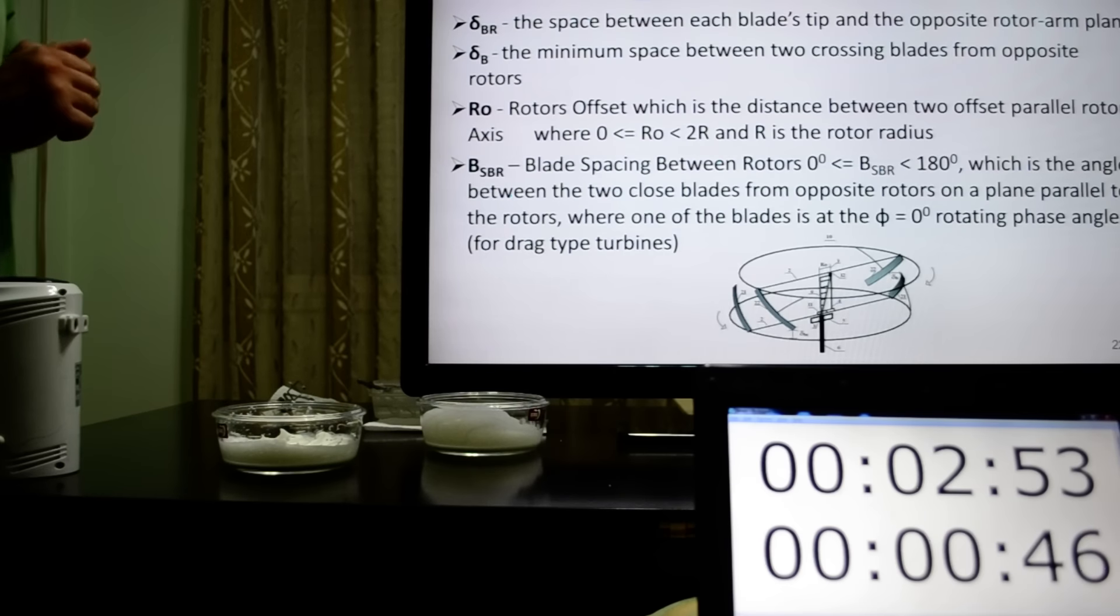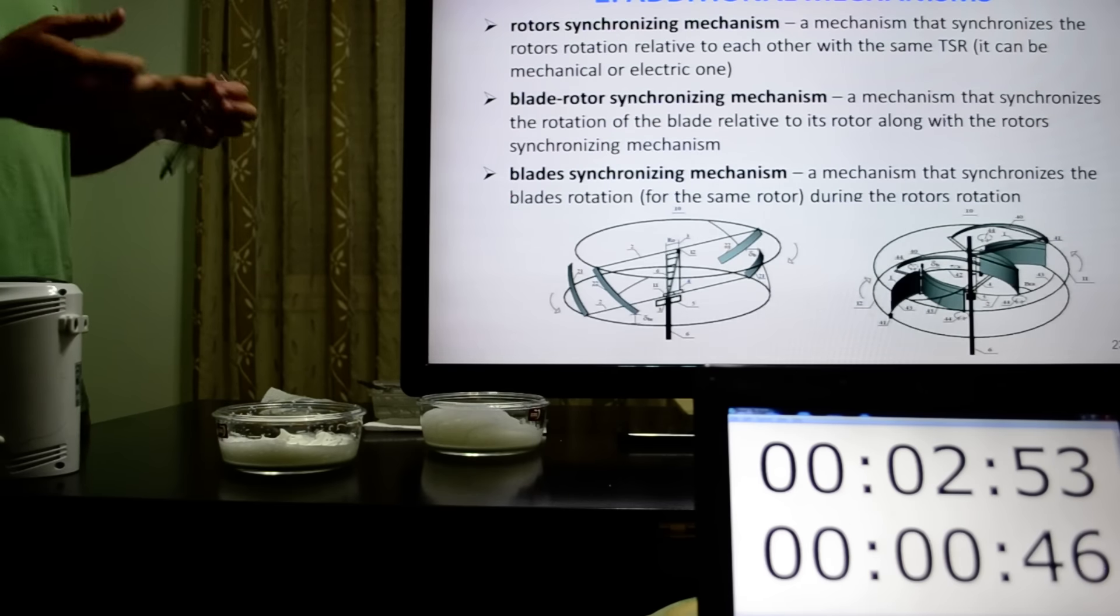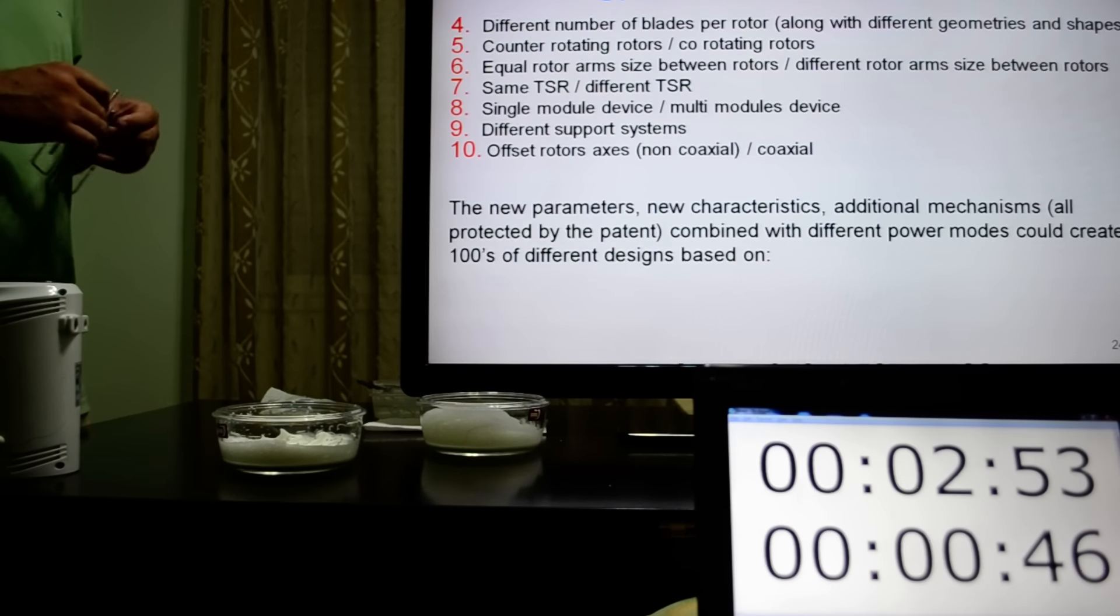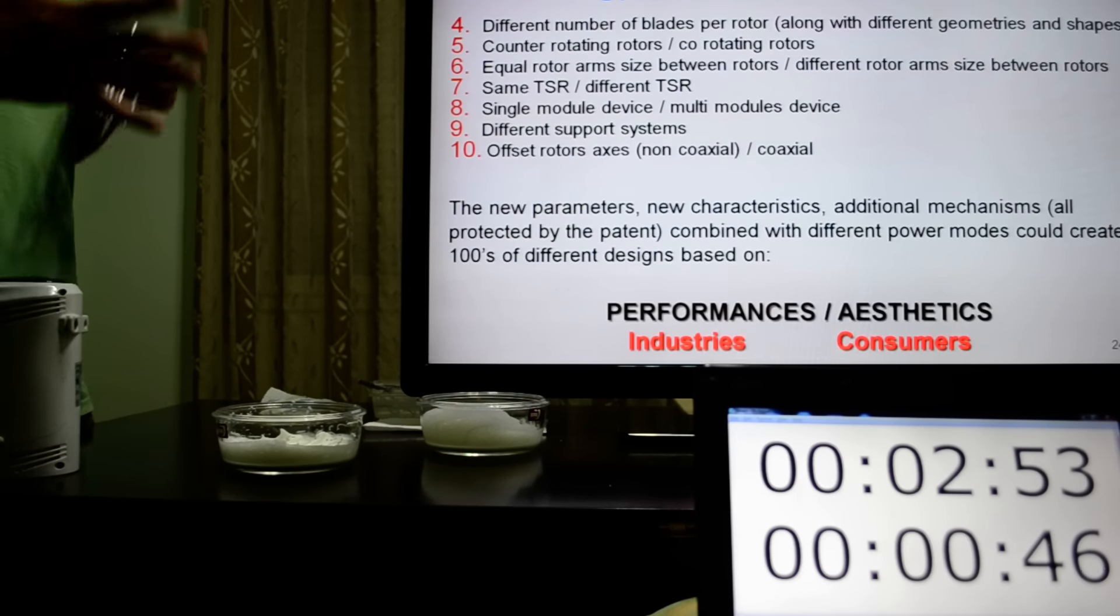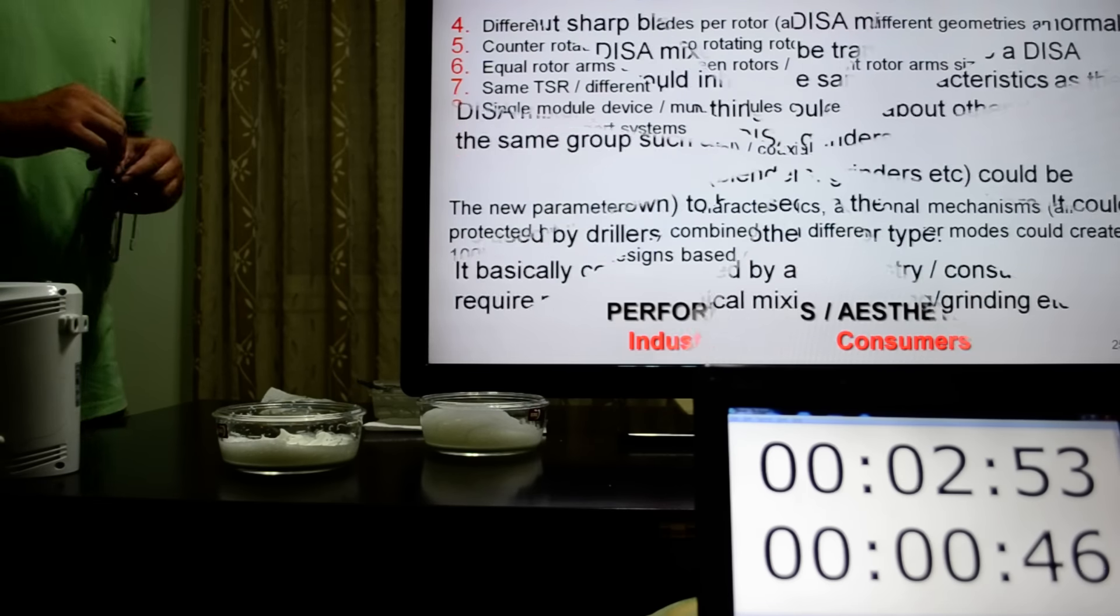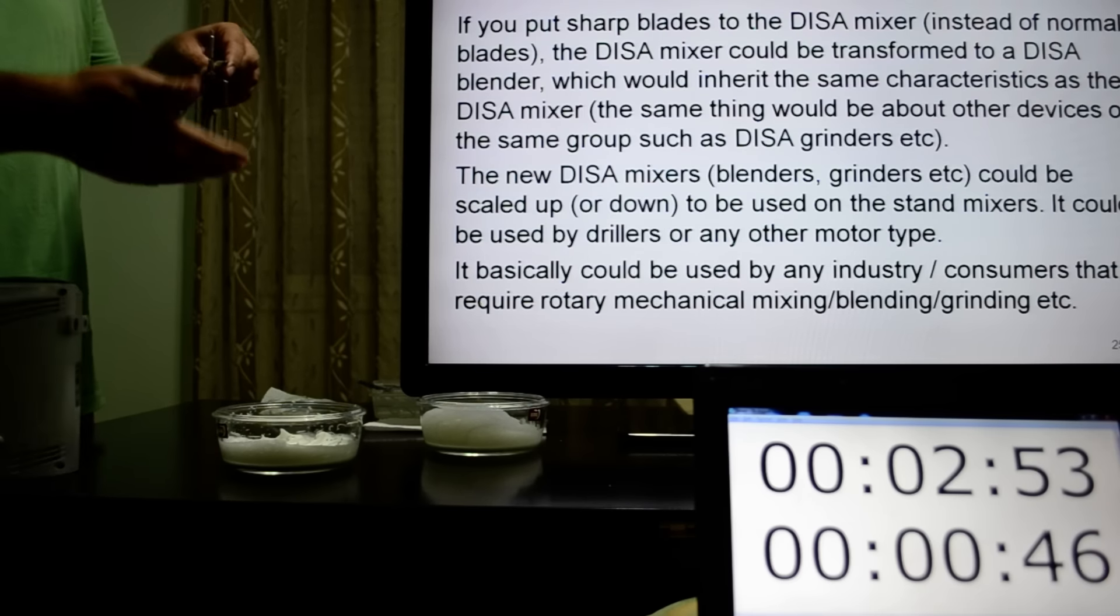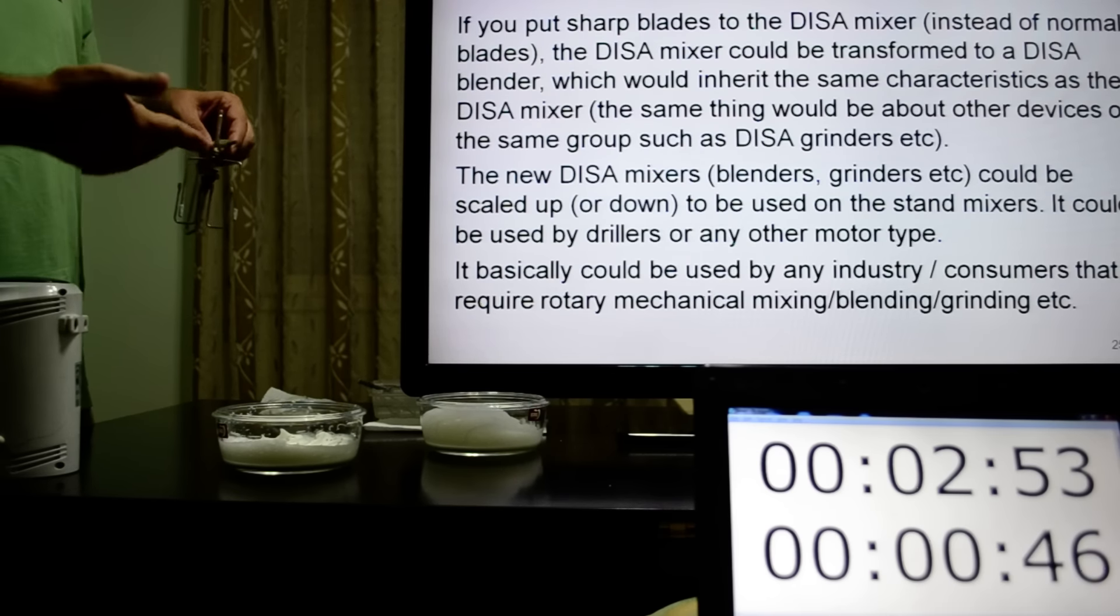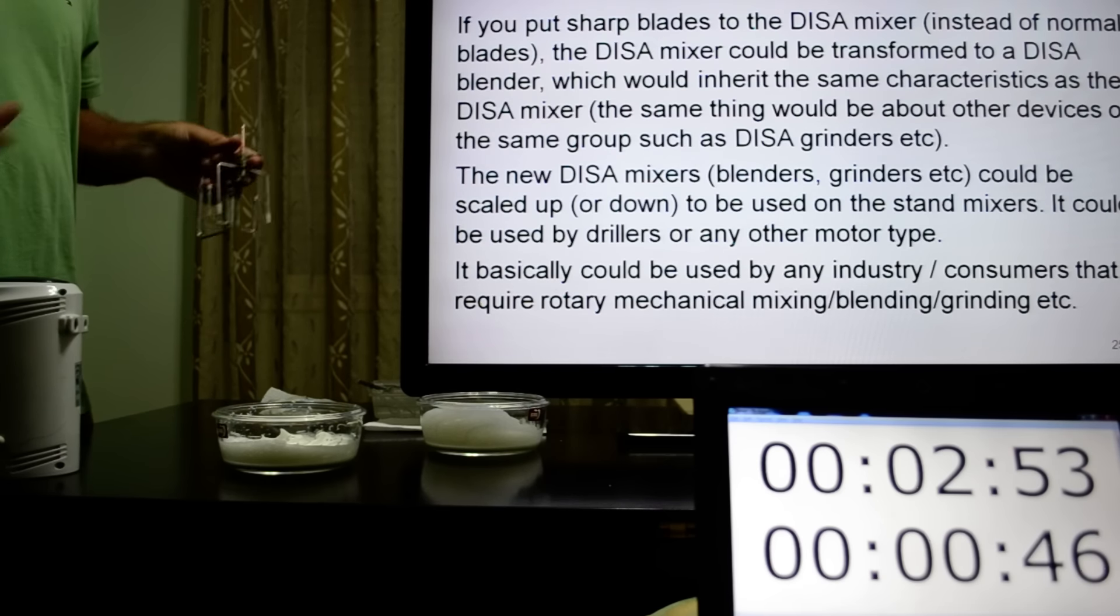The new mixer has new parameters compared to the old one. It has additional mechanisms and new characteristics. The new parameters, new characteristics, additional mechanisms, combined with different power modes could create hundreds of different designs based on performance and aesthetics. If you put sharp blades to the mixer instead of normal blades, the mixer could be transformed to a DISA blender, which would inherit the same characteristics as a DISA mixer. The same thing would be about other devices of the same group, such as DISA grinders, etc.